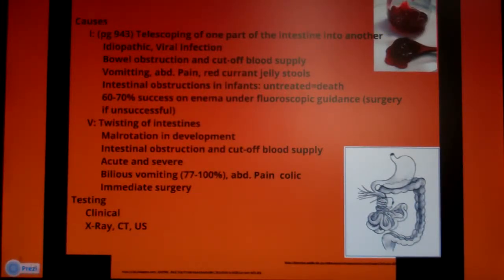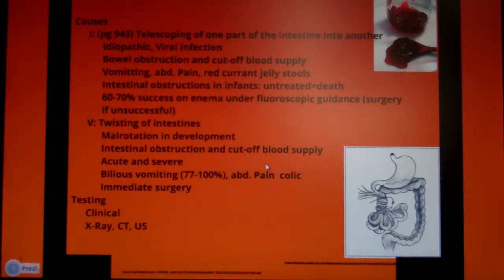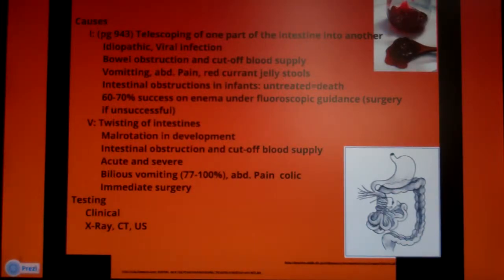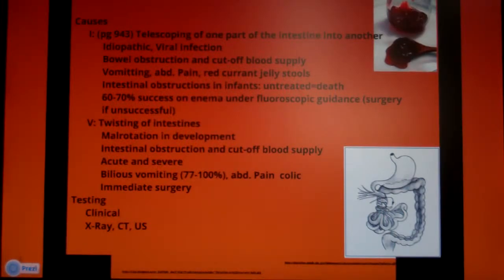Moving on to volvulus — the intestines literally twist up. This is usually happening in a baby, related to malrotation in development. What happens is that when the digestive system is developing in the fetus, it pops out of the abdomen, rotates, and spins back in. Sometimes it gets tangled as it returns, which is called malrotation in development.